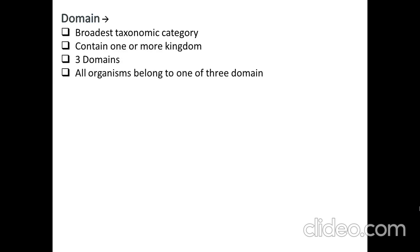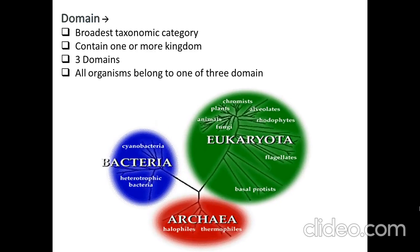We have three domains — all organisms belong to one of three domains: Bacteria, Archaea, and Eukarya. Bacteria are prokaryotic unicellular organisms; we cannot see them with our naked eyes because they are made of only one cell. Humans fall under the eukaryotic domain because we are eukaryotic organisms. In the next few classes, we will discuss prokaryotic and eukaryotic organisms.